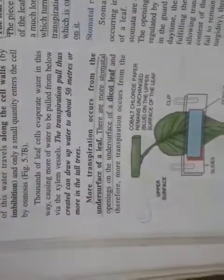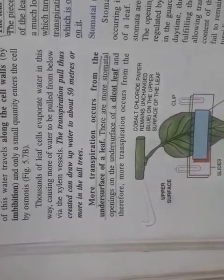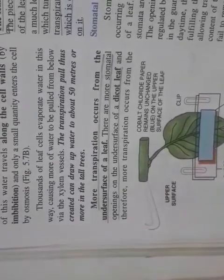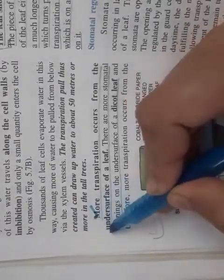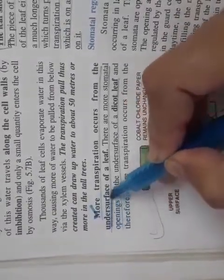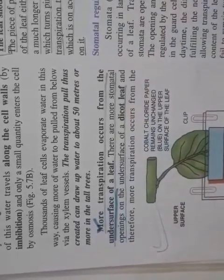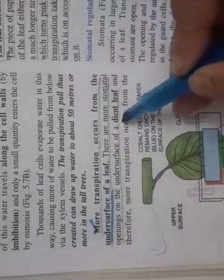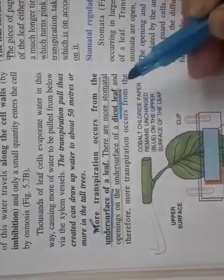Now here is another very important experiment. More transpiration occurs from the under surface of a dicot leaf. Why? Because there are more stomata on the lower surface of a dicot leaf.